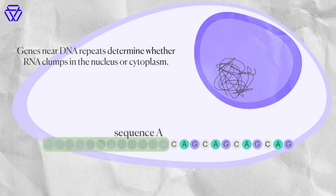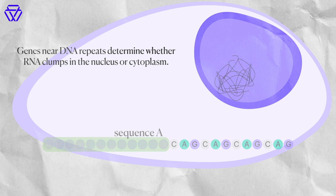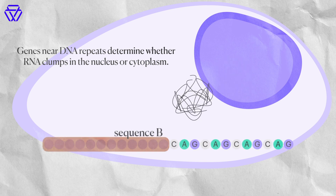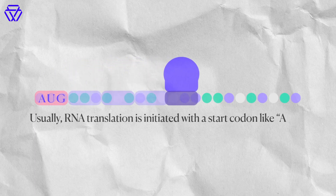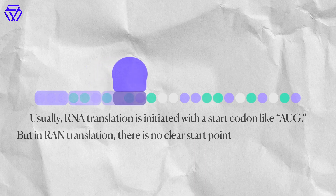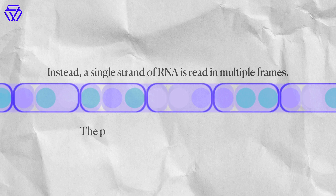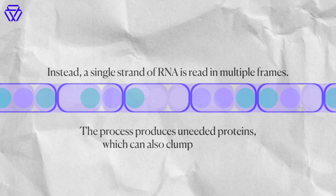The sequences flanking the actual repeats themselves seem to govern which route the repeat RNA takes — whether it's retained at nuclear clumps or exported to form cytoplasmic clumps. These different flanking sequences are actually changing whether that repeat RNA undergoes RAND translation. Usually RNA translation is initiated with a start codon like AUG, but in RAND translation there's no clear start point. Instead, a single strand of RNA is read in multiple frames, producing unneeded proteins which can also clump together.